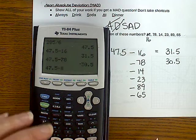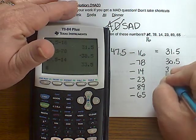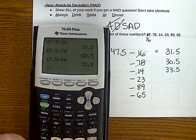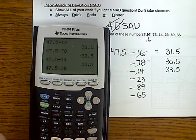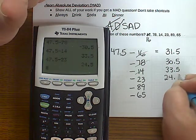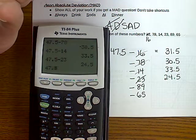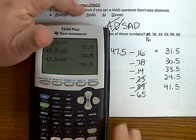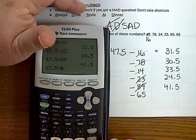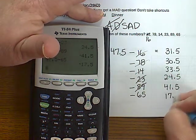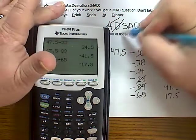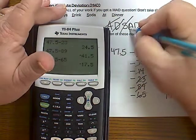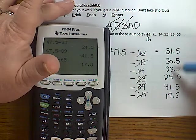So 47.5 subtract 14. And I get 33.5. And you might even cross these off as you do them so that you keep track of which ones you've done. 47.5 subtract 23. And I get 24.5. 47.5 subtract 89. And I get 41.5. 47.5 subtract 65. And I get 17.5. So I'm done with S. Subtract. I'm marking it off. The next step is A divide. Add. I'm sorry. A removes for add. So I need to add each of these six numbers.